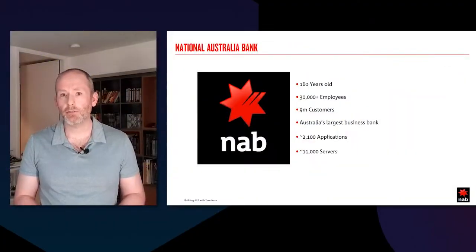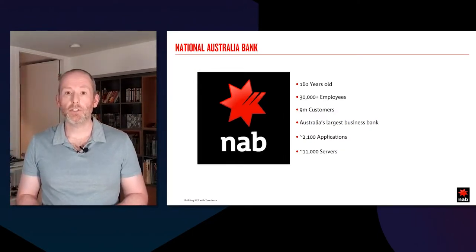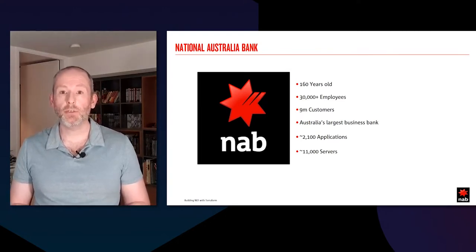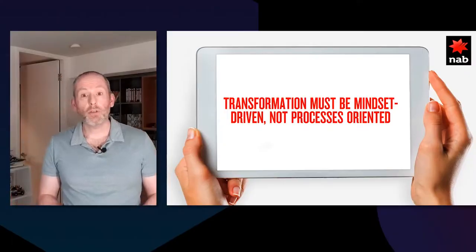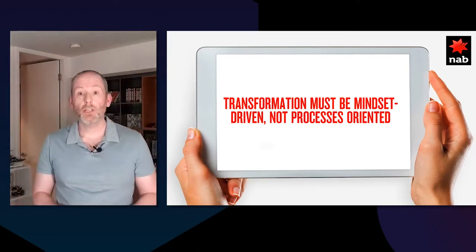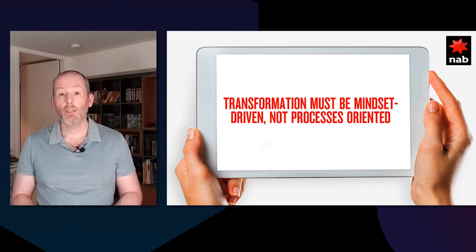I wanted to start with a little background around NAB. We're a 160-year-old company with an extensive workforce in Australia. We are the number one business bank and we service 9 million customers. In our technology fleet, we have over 2,100 applications supported on 11,000 servers — an extensive technology footprint that requires automation and orchestration to manage effectively. Part of our journey has been moving efficiently into the cloud, underpinned by our cloud-first strategy, moving applications into AWS and Azure.